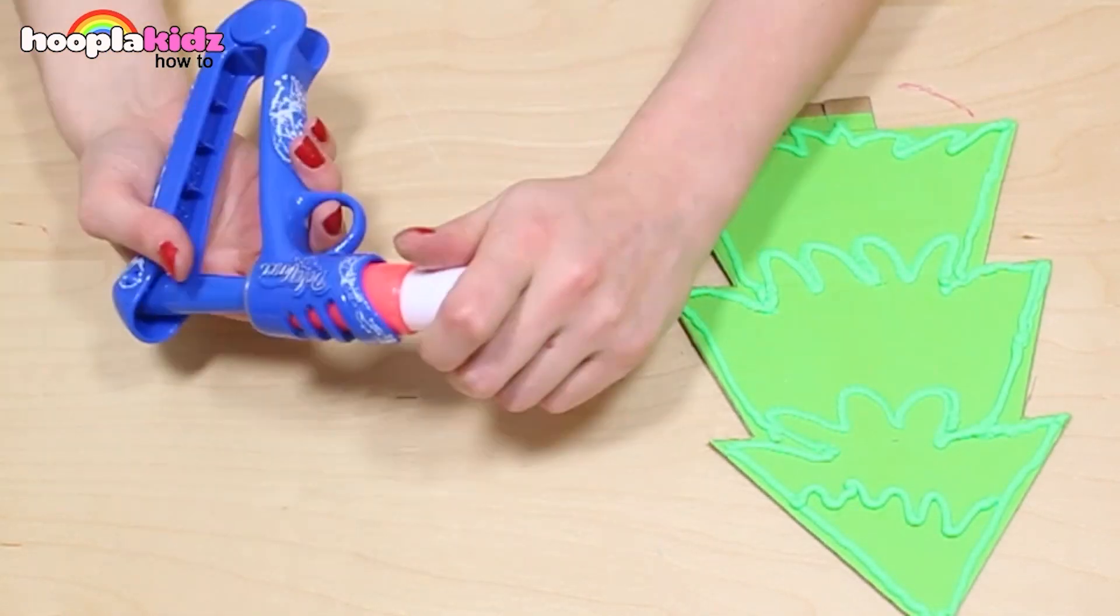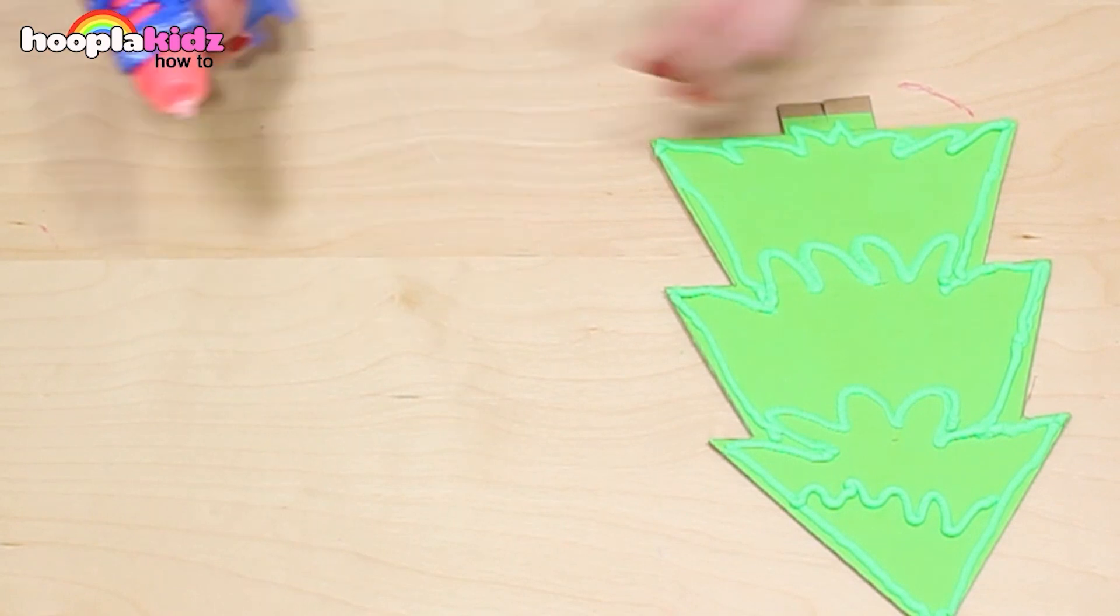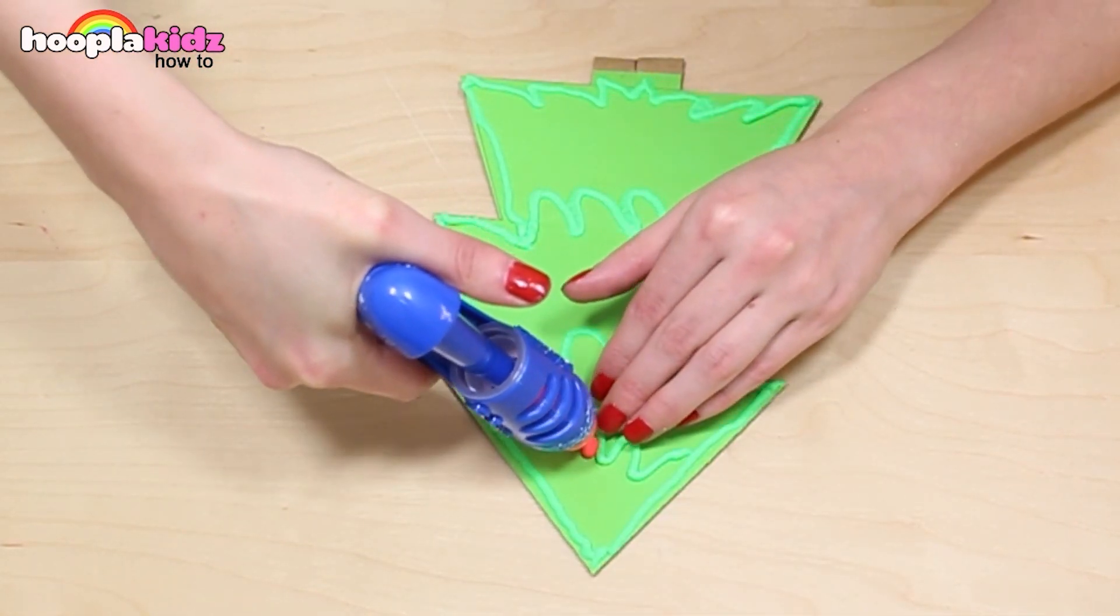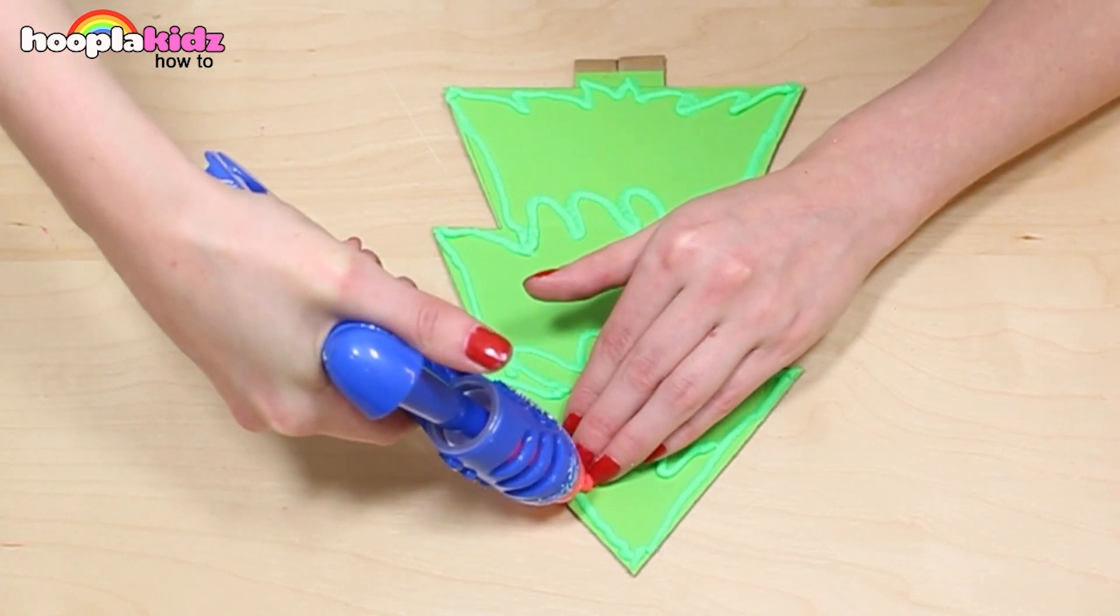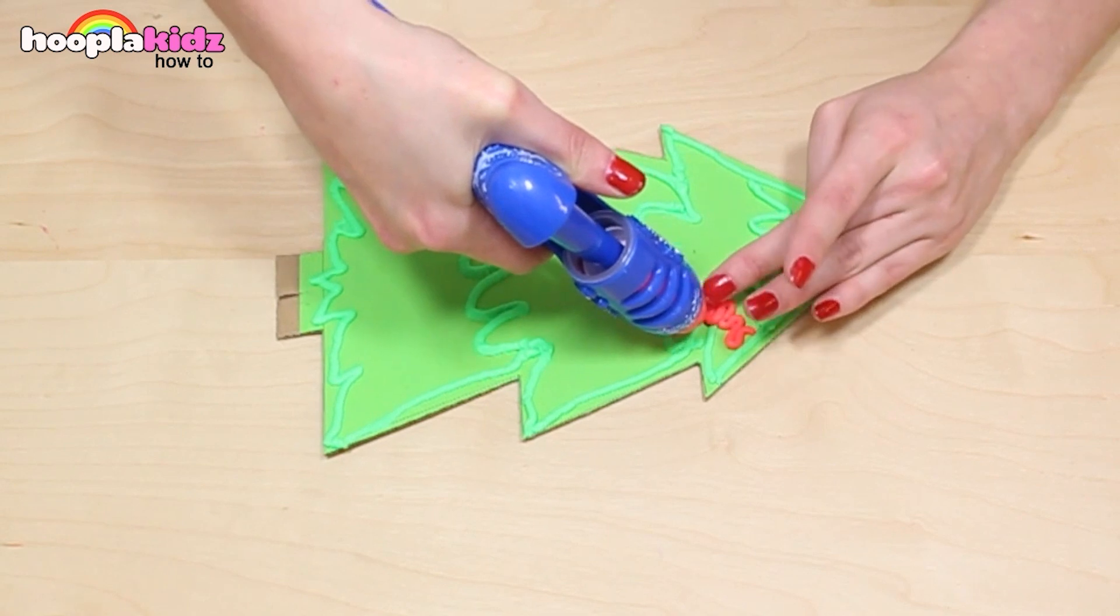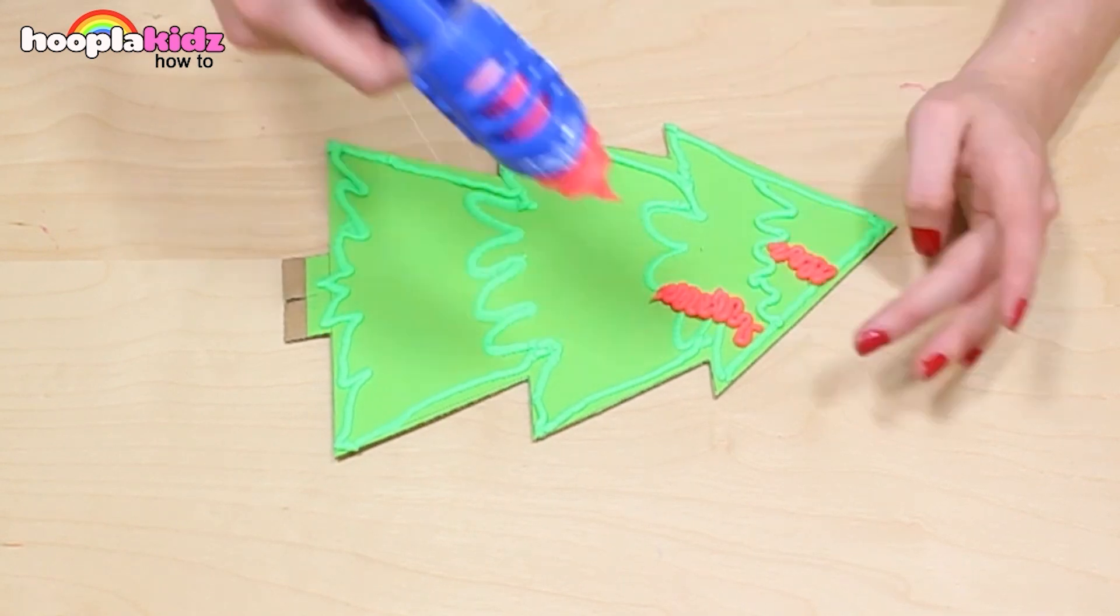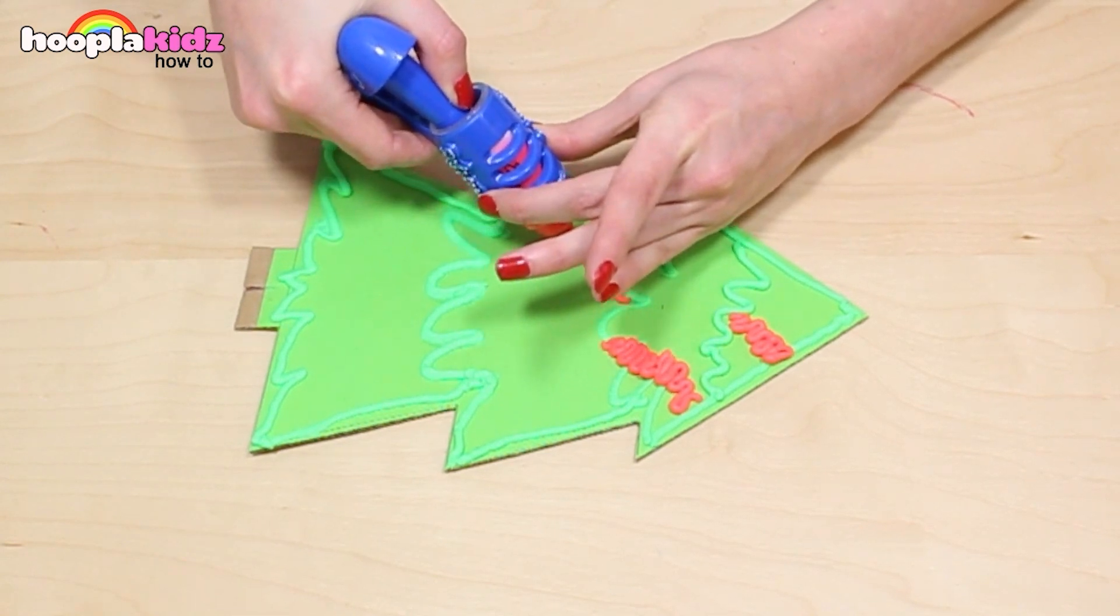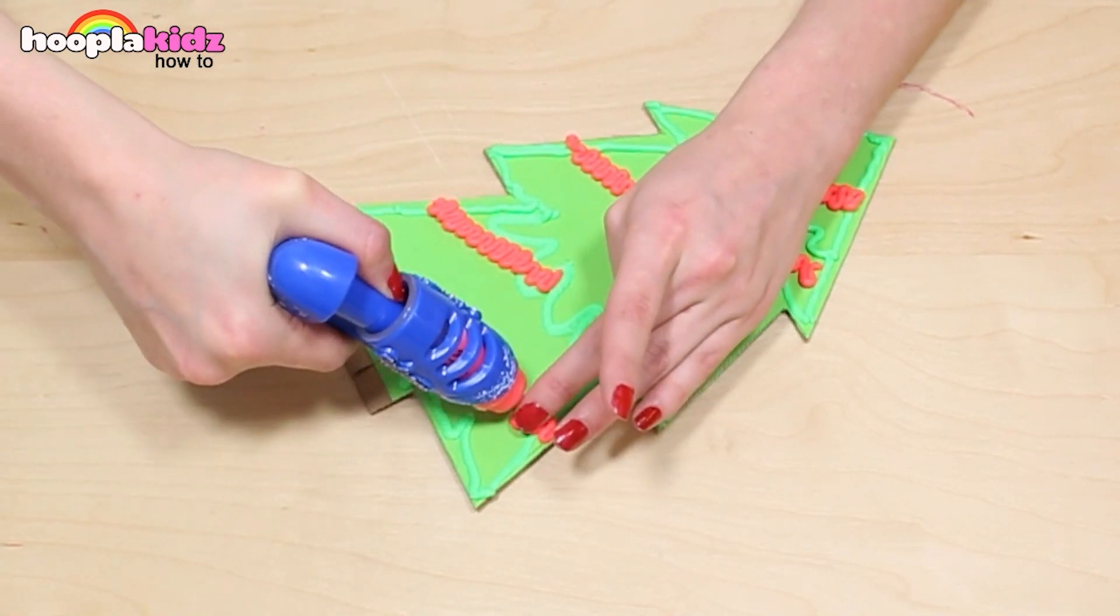Now let's add some color. I'm going to start with some red tinsel. Doesn't this look awesome? It gives such a great 3D effect. Keep going! I'm doing it on a diagonal.